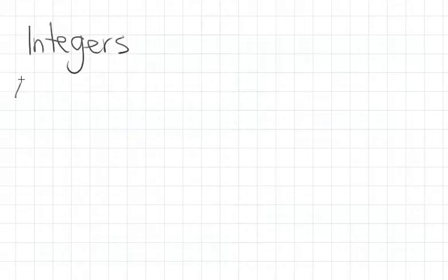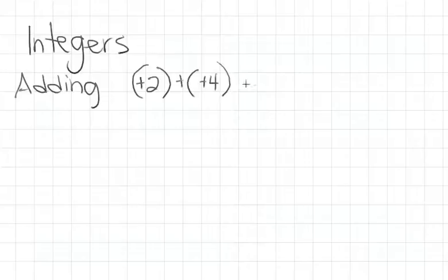A topic we covered today was adding integers. There are a couple of special rules. When you're adding two numbers that have the same sign, for example, positive 2 plus positive 4,